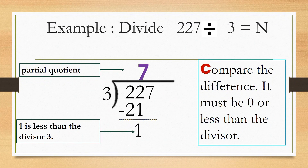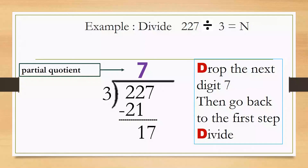Next step is C — compare the difference. It must be 0 or less than the divisor. Here the difference is 1 and 1 is less than the divisor, so we can move on to the next step. Next step is D — drop the next digit 7.